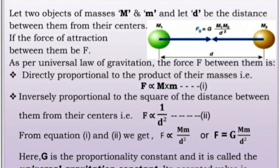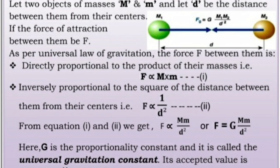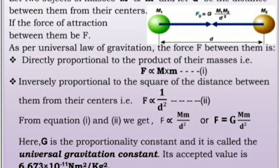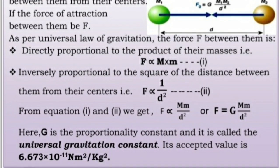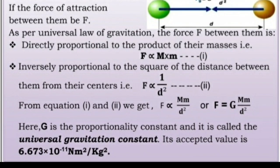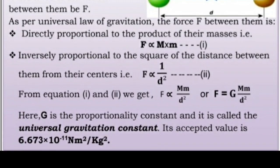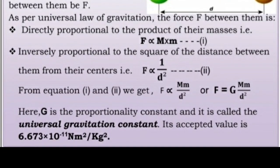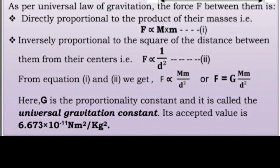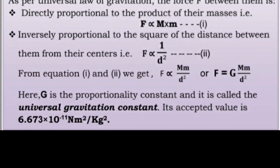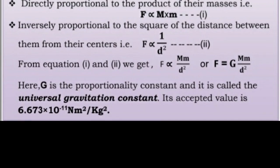F is also directly proportional to 1 upon d square. From equation 1 and equation 2, we get F is directly proportional to Mm upon d square, or F is equal to G·Mm/d square. Here, G is the proportionality constant and it is called the universal gravitational constant. Its accepted value is 6.673 × 10 to the power minus 11 newton meter square per kg square.